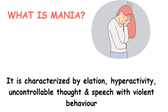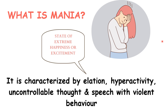Mania is characterized by elation, hyperactivity, uncontrollable thought, and speech with violent behavior. Elation is the state of extreme happiness or excitement — very excited. Hyperactivity, uncontrollable thought, speech with violent behavior — very violent. That's mania.